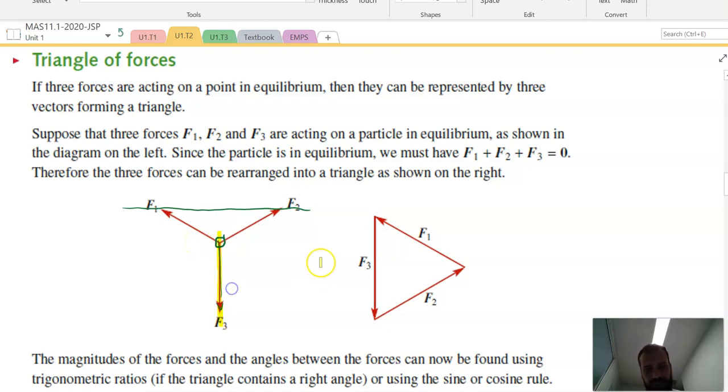The strings are holding the object up. Now we can reorient those, so F3 is here, F1 is here, F2 is here. And we can orient them into a triangle, as long as that's in equilibrium. If that object was falling down, obviously, it doesn't work anymore, that equilibrium doesn't hold.